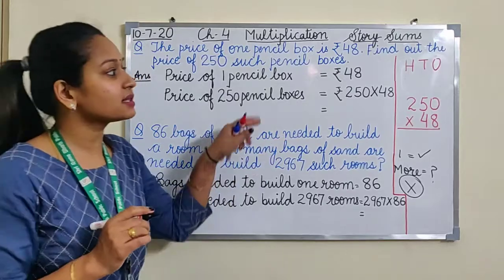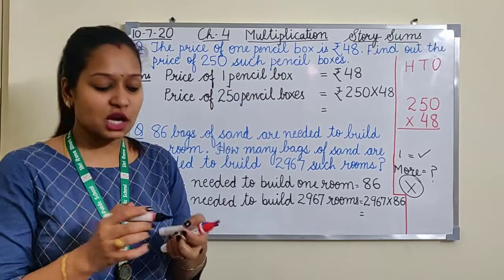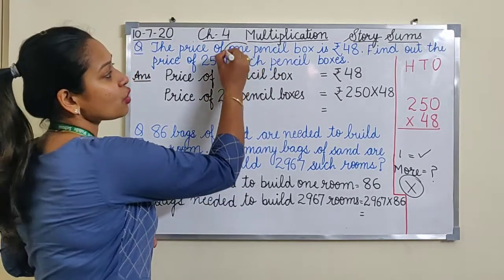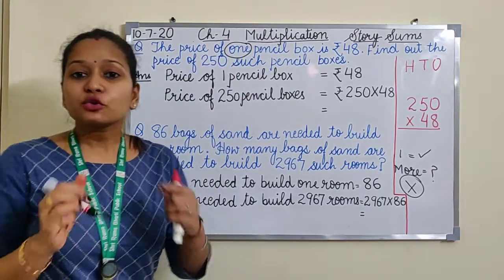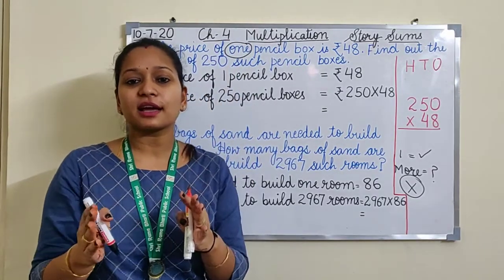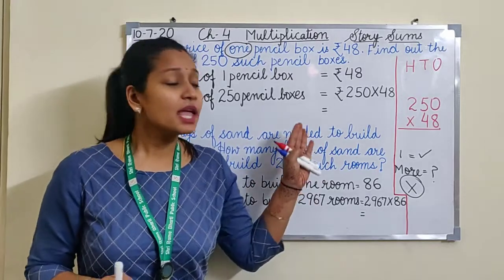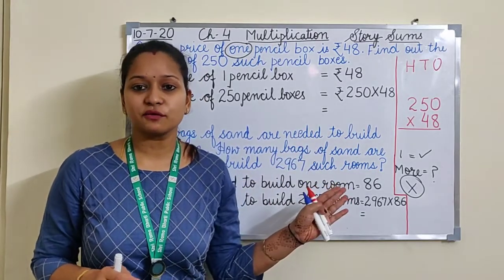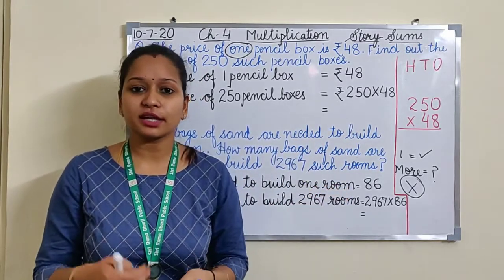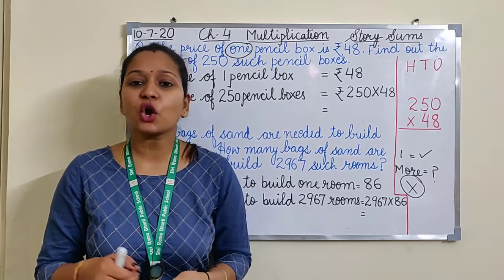Also one more trick is there: whenever the statement is talking about one, like one pencil box. So jab bhi one aata hai, a aata hai, unit aata hai - these all words signify that in this question, either there would be multiply or divide.